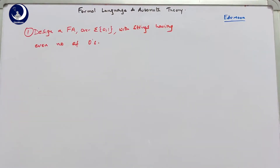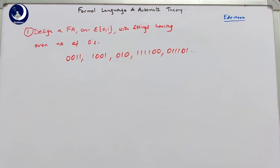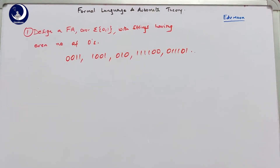As the first example, we try to design a finite automata over sigma equal to {0,1}, which contains strings having an even number of zeros. So all the strings that contain an even number of zeros. The condition is given only on the number of zeros, so we should count the number of zeros, and there can be any number of ones. For example, strings like 0011 and 10010 are formed using two zeros and there can be any number of ones.